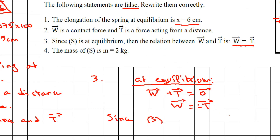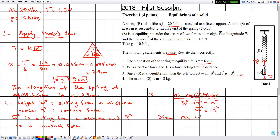The minus sign is very important: it tells us that W and T have opposite directions, while the equality tells us they have the same line of action and same magnitude. The correct statement is: since S is at equilibrium, the vector relation between W and T is W⃗ equals minus T⃗.